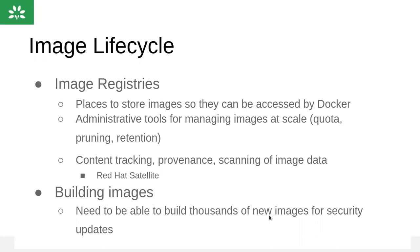When it comes to the image registry, all images — when we deploy any application, from front-end to back-end — we will create an image. By using the image, we can create a containerized version of particular applications or microservices. Those images should be stored under a particular registry called the image registry. That predefined, inbuilt Docker registry is available in OpenShift. That is the main advantage.